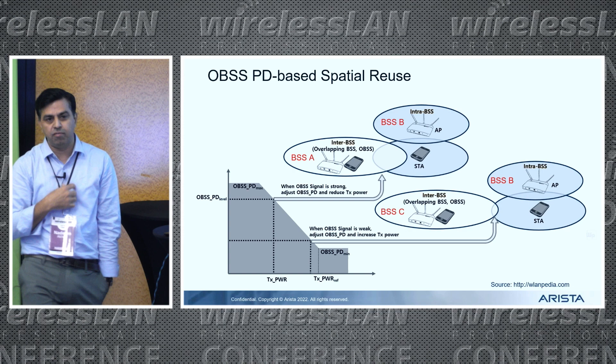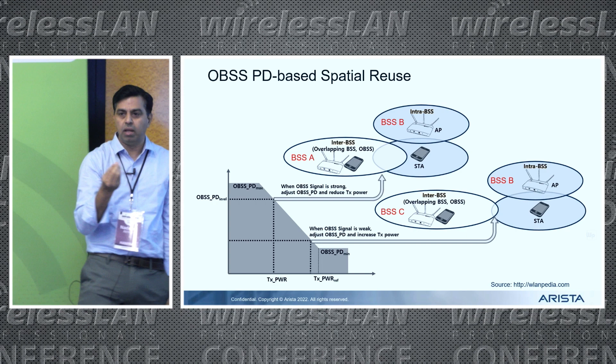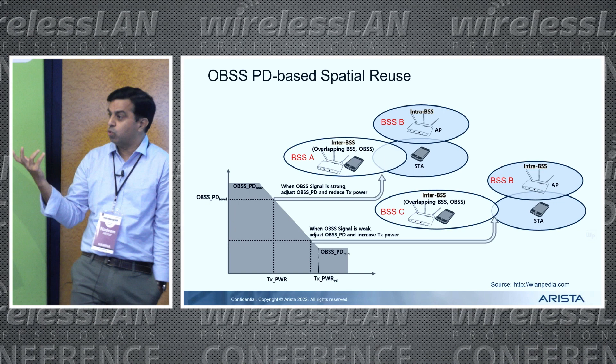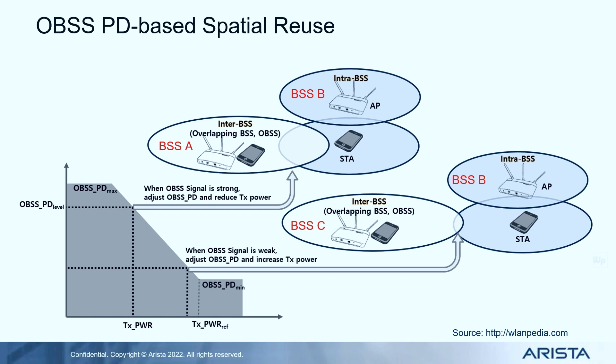Let's start with the very simple scheme, which is the OBSS PD spatial reuse. The basic idea is simple: you detect whether a frame is coming from your BSS or another BSS — an overlapping BSS. That's the first step. Once you figure out that this frame is an inter-BSS frame, you decide at what power you should be transmitting so that you don't cause interference to the original, or primary, transmission.